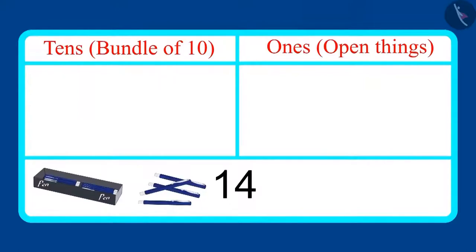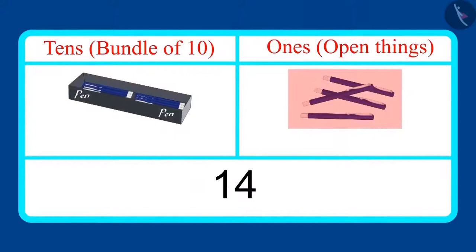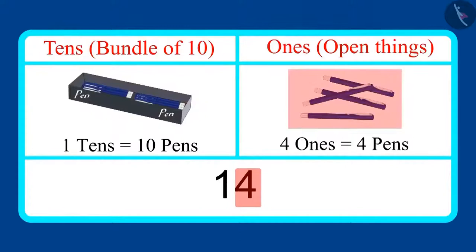Now, let's look at the number of pens, which is 14. Can you tell me how many tens and ones are there in it? This is one bundle of 10 pens and 4 more pens. That means it has one ten and 4 ones. Your answer was the same, right?